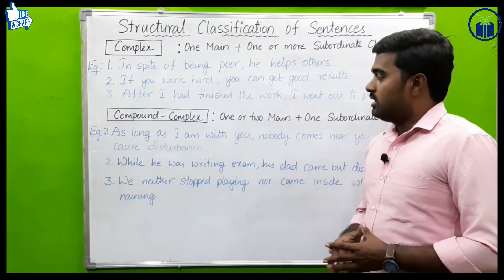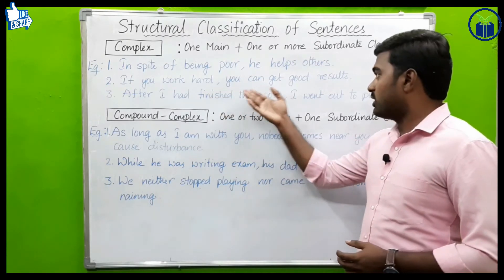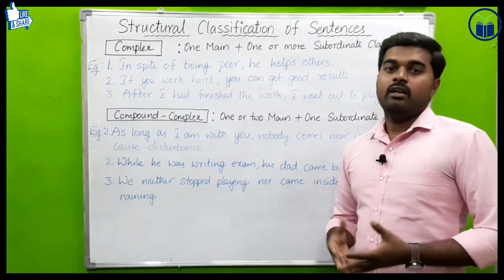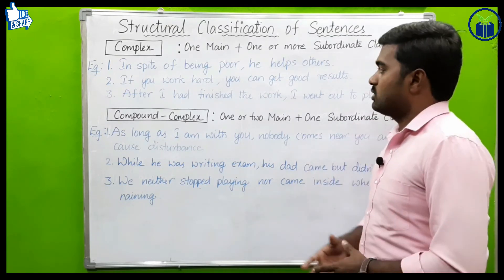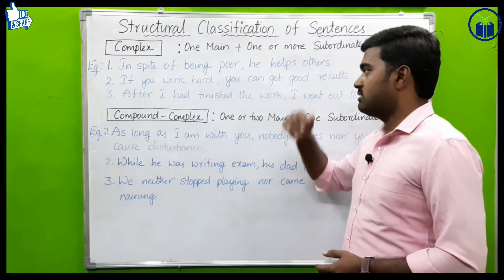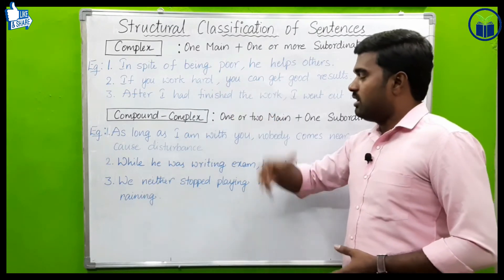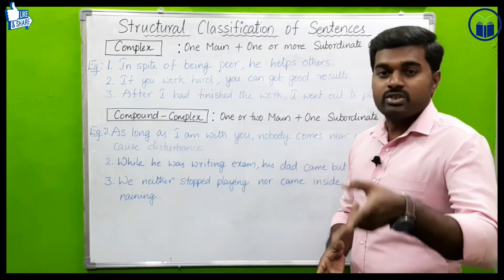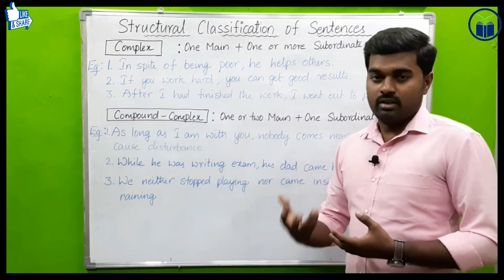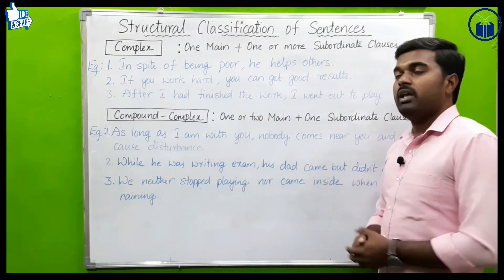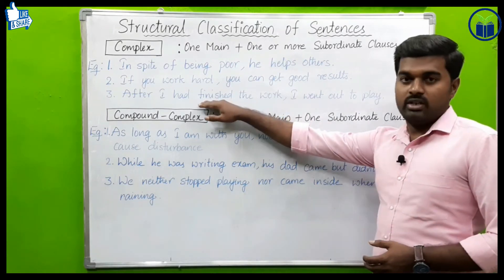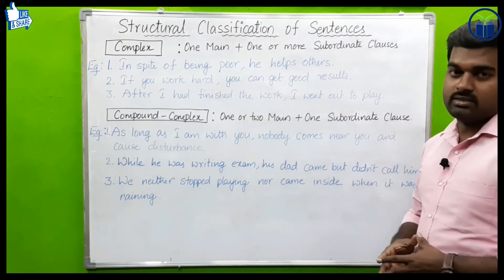Second complex sentence example: 'If you work hard, you can get good results.' Here 'if you work hard' is the subordinate clause, and 'you can get good results' is the main clause. Third example: 'After I had finished the work, I went out to play.' Here 'after I had finished the work' is the subordinate clause, and 'I went out to play' is the main clause.